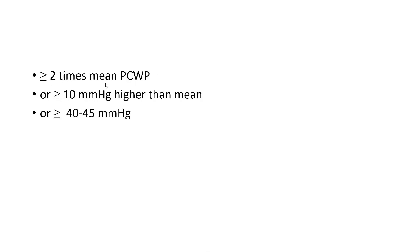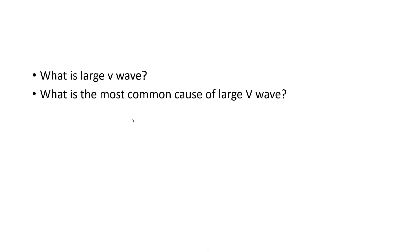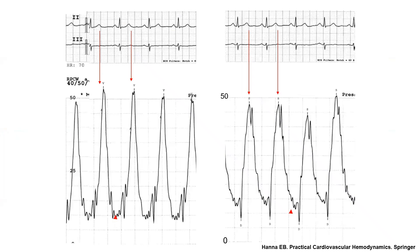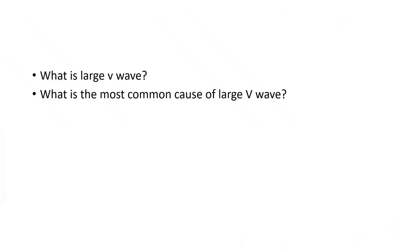The most common cause of a large V-wave is decreased atrial compliance — such as acute decompensated heart failure, acute mitral regurgitation, or acute VSD — anything that overwhelms the atrial compliance. More than half the time, approximately 50–60% of large V-waves are not mitral regurgitation. They are most commonly decompensated left heart failure, where volume overload and high venous return overwhelm left atrial and left ventricular compliance.